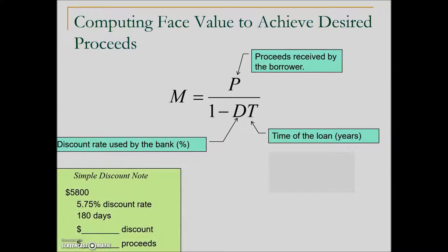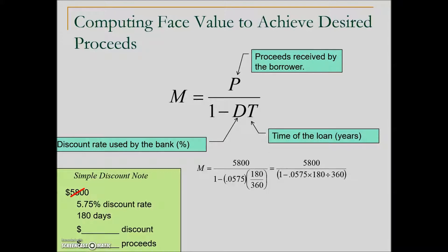In our example, what would that amount be for the proceeds? Our desire here is to have proceeds of the needed $5,800 for the home improvement. We replace the rest of the variables with the given information. Our discount rate is 5.75%, expressing that as a decimal, and time in years — this is a 180-day loan. To calculate this, we can either simplify the denominator and then divide, or put this all in our calculator in one operation by entering $5,800 divided by the expression in the denominator in parentheses.